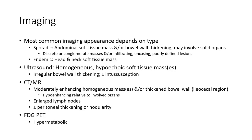On CT and MRI: moderately enhancing homogeneous mass and or thickening of bowel wall. High signal intensity relative to involved organs. Enlarged lymph nodes, as well as peritoneal thickening or nodularity. On FDG-PET: hypermetabolic lesions.